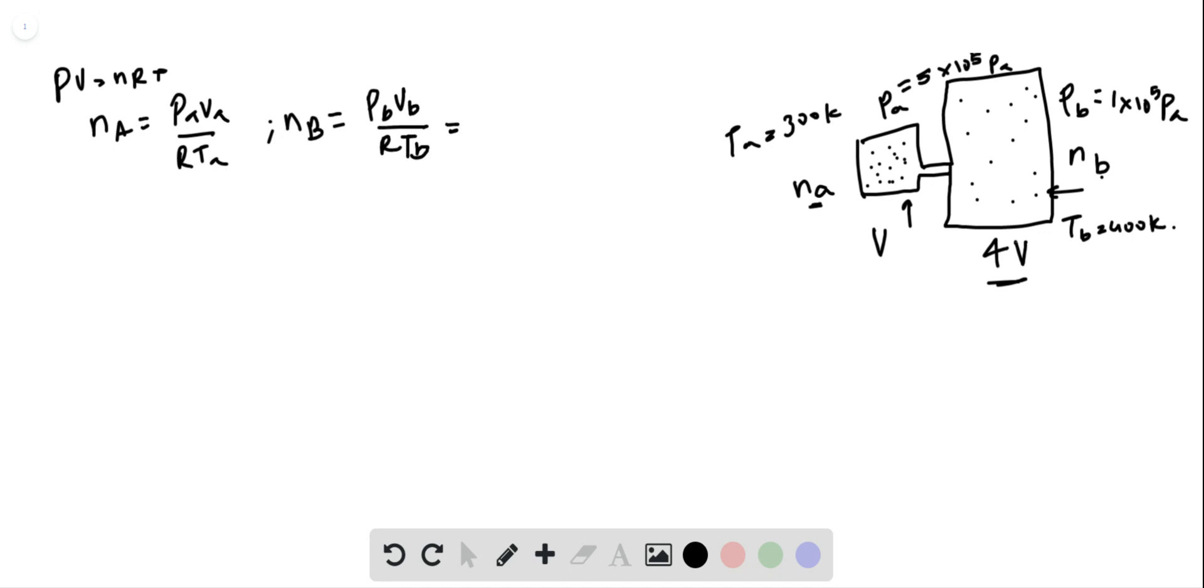And notice that VB, which is the volume of the right hand side, is 4 VA. So that's 4 PB VA by R TB.